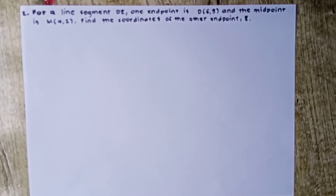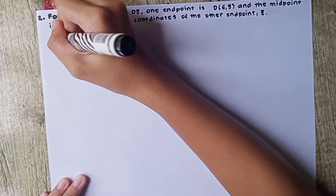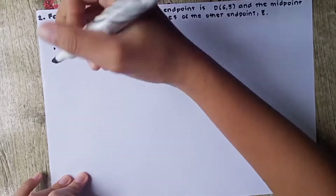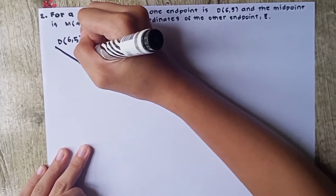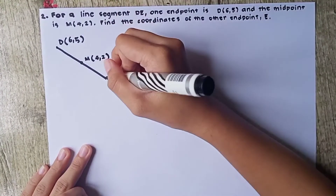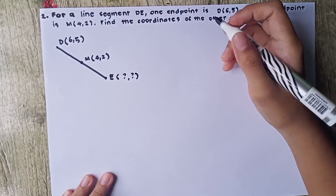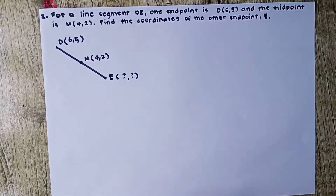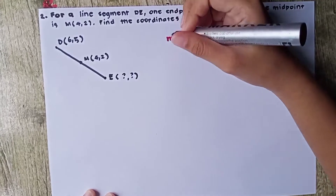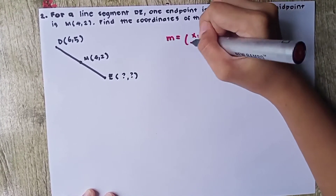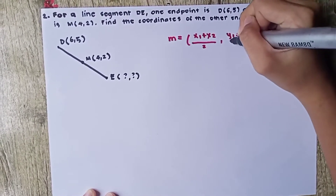Number 2. For a line segment DE, one endpoint is D(6, 5) and the midpoint is M(4, 2). Find the coordinates of the other endpoint E. We are given D(6, 5) and the midpoint M(4, 2), and we need to find E. We will use the midpoint formula: M = ((x1+x2)/2, (y1+y2)/2).